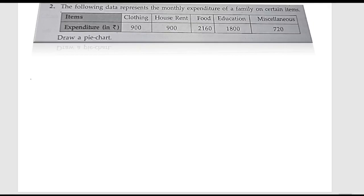Now let us start the second problem. The following data represents the monthly expenditure of a family on certain items. The items given are clothing, house rent, food, education, and miscellaneous. The expenditures are 900, 900, 2160, 1800, and 720.